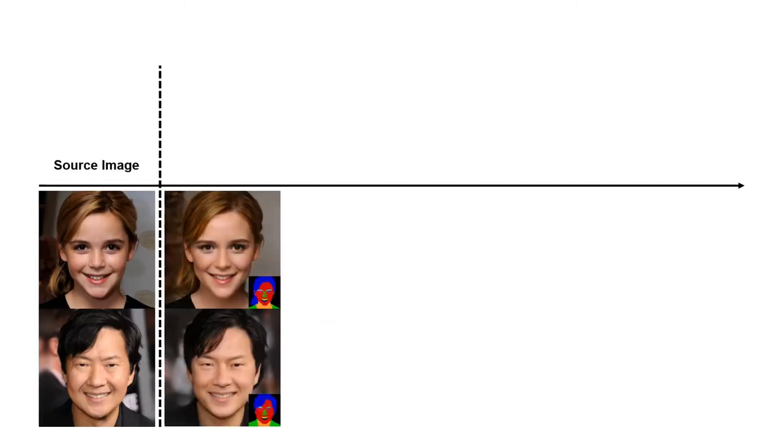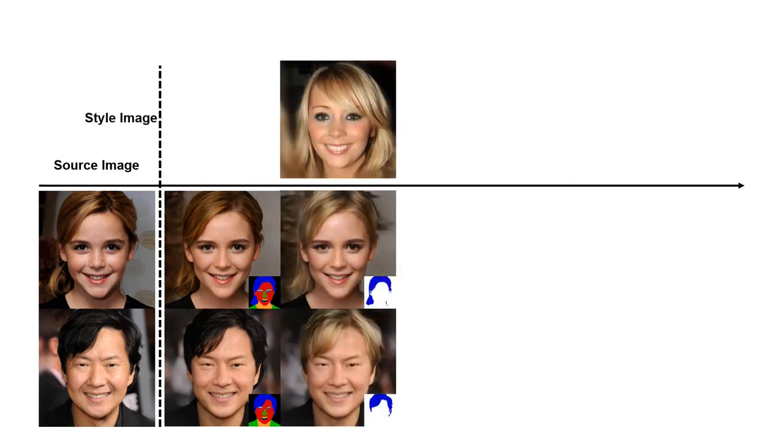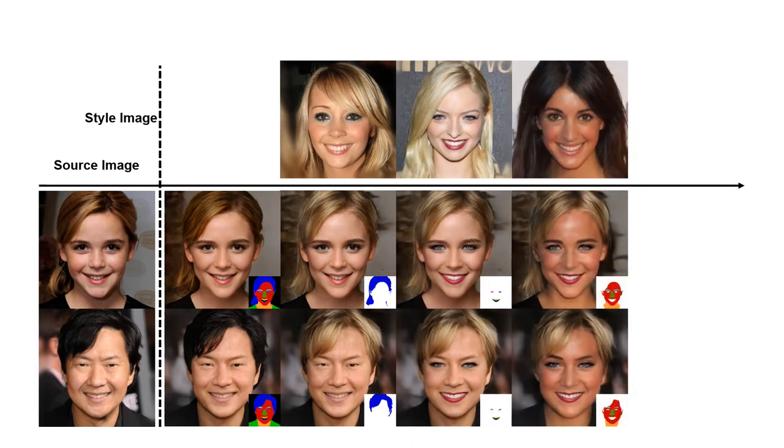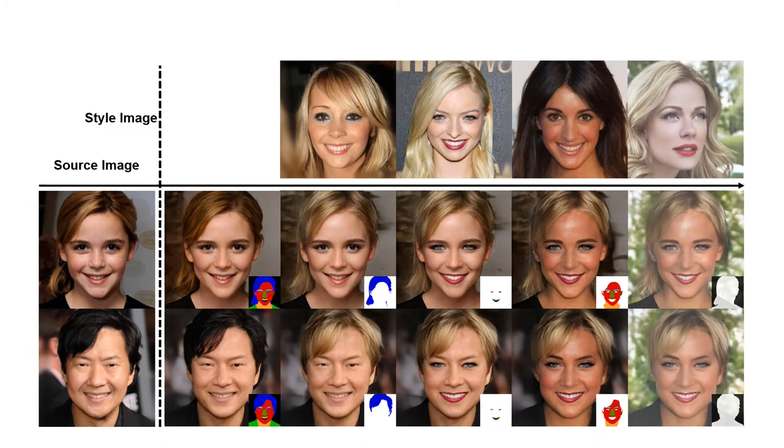Here is an example of our face image editing results. By controlling the style code of the corresponding semantic regions, we can edit the hair, mouth and eyes, skin tone and background of the input image respectively.